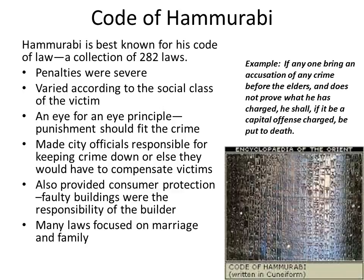For example: if anyone brings an accusation of any crime before the elders and does not prove what has been charged, and it is a capital offense, he shall be put to death. So if I accuse you of murder — a capital crime — but you can prove I was wrong, then I get put to death. This prevented false accusations. A lot of the Code of Hammurabi, if you look at it in the context of modern-day laws, makes sense — we have a lot of the same laws on the books today. That's why Hammurabi is so important.